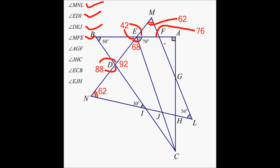Now angle AGF is the next angle — that's not too difficult. Note that if angle MFE is 76, this angle has to be 76 as well — vertical angles. So in triangle AFG, I know this angle and this one. From 180, if I subtract 90 and then subtract 76, I get the measure of this angle, which will be 90 minus 76 equals 14. So I am going to label it 14.